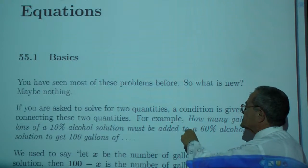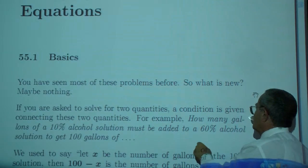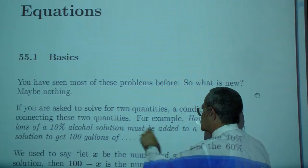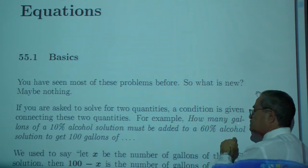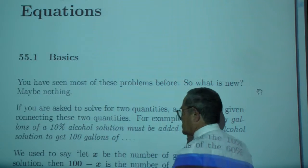If you're asked to solve for two quantities, a condition is given connecting these two quantities. For example, how many gallons of a 10% alcohol solution must be added to a 60% alcohol solution to get 100 gallons...